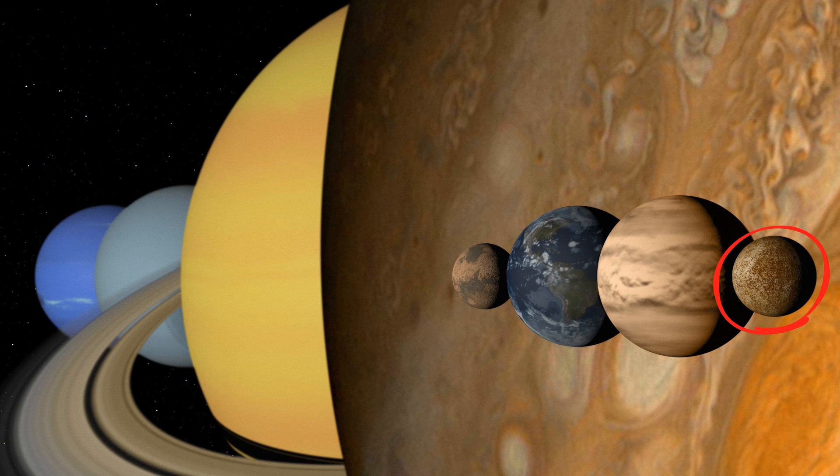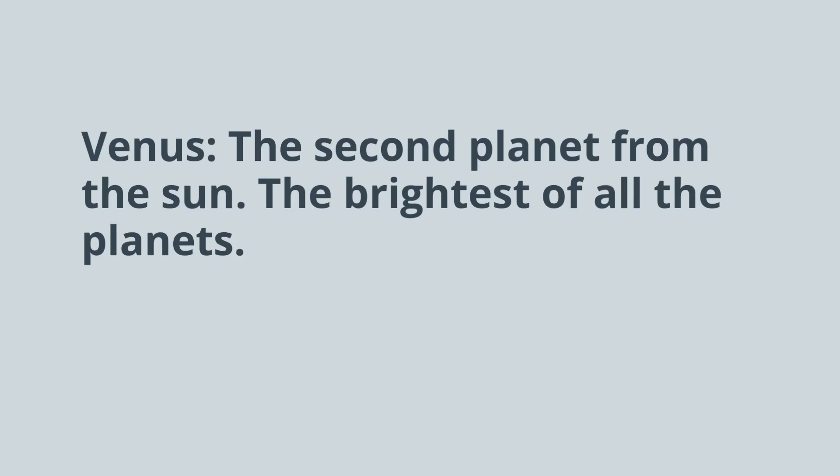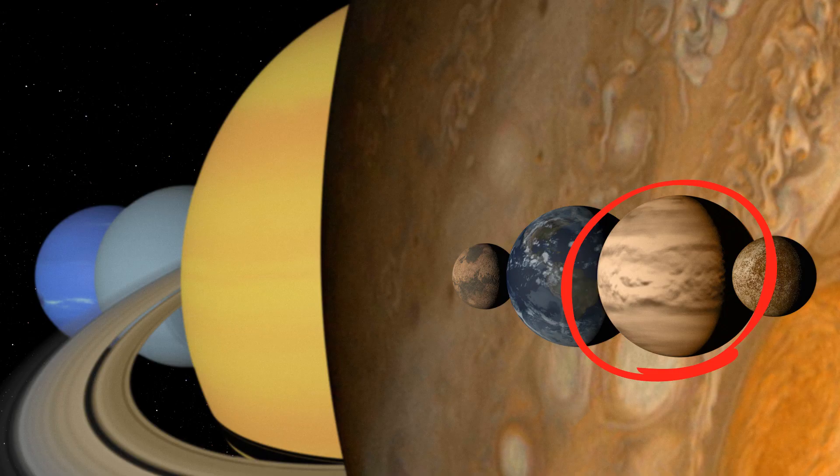Next, we have Venus, the second planet from the sun. It's the brightest of all the planets. And here's a picture of Venus.